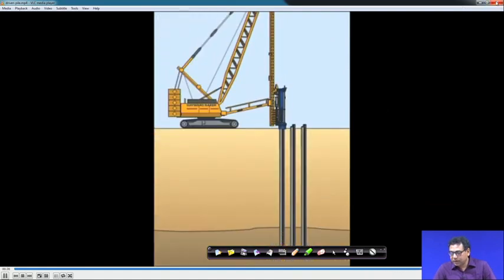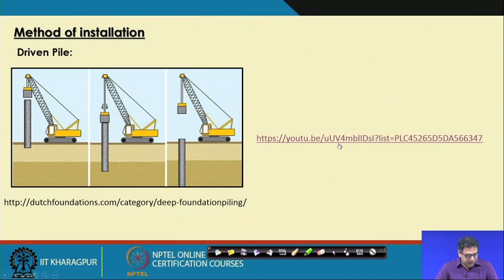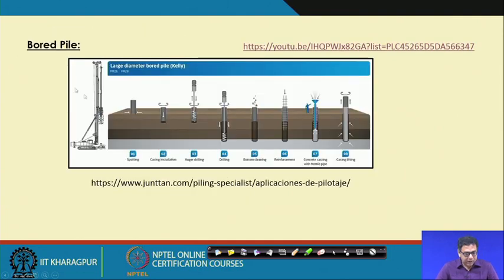These are called driven piles. The next type is the bored pile, where first boring is done, then the reinforcement is placed, concreting is done, and finally the casing — if present — is lifted.